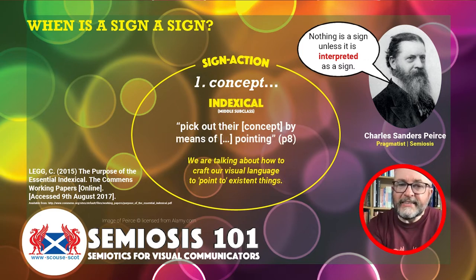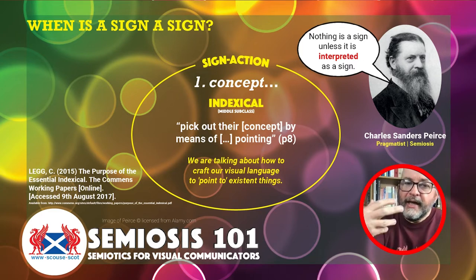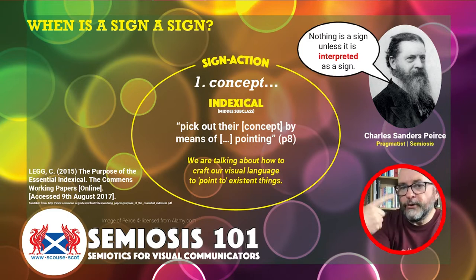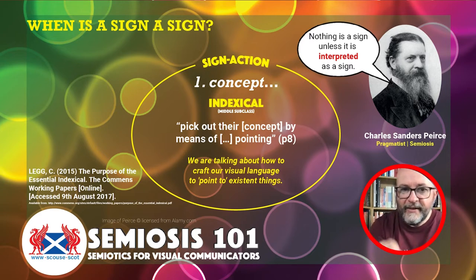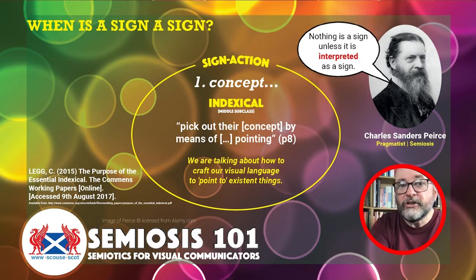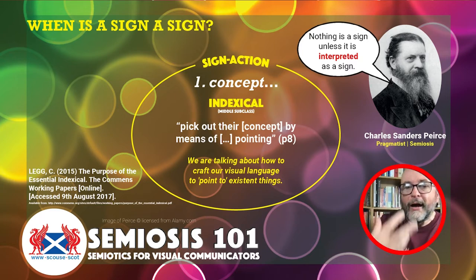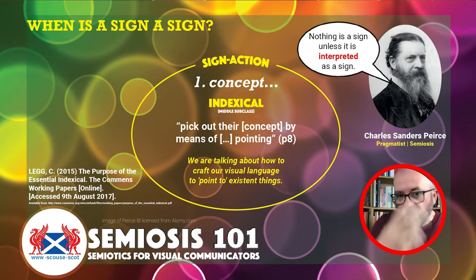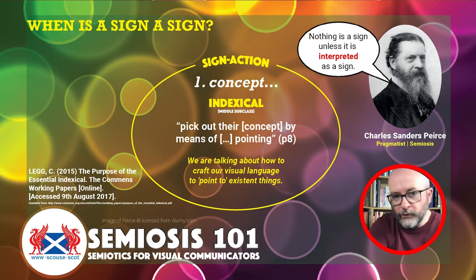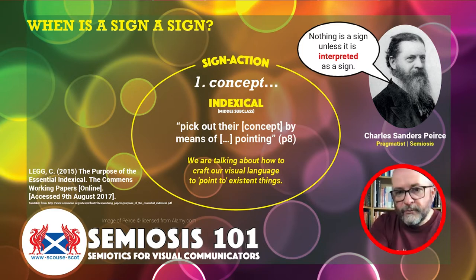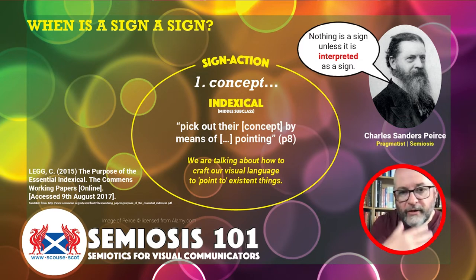Moving up a level: indexical, the middle subclass of how to represent the concept. It's when we pick out the concept by means of pointing — think about your index finger. We use it to point to things in front of us that we can see and know. Indexical representation is about crafting our visual language to point to existing things — real objects in the world, but also ideas from literature, philosophy, or popular culture.